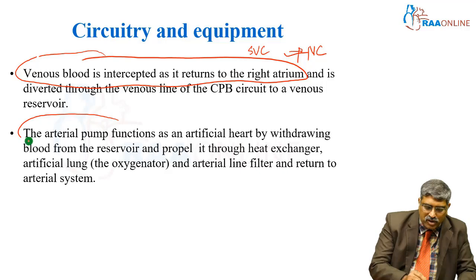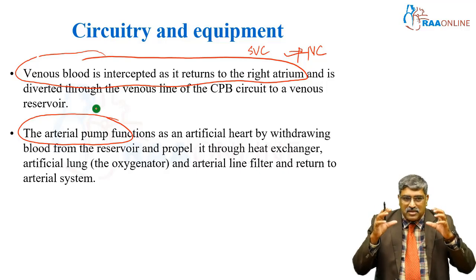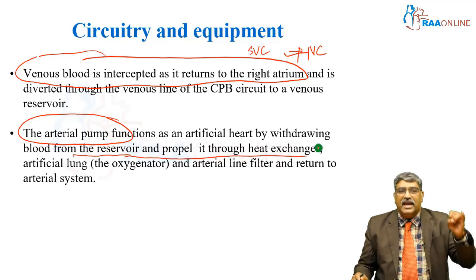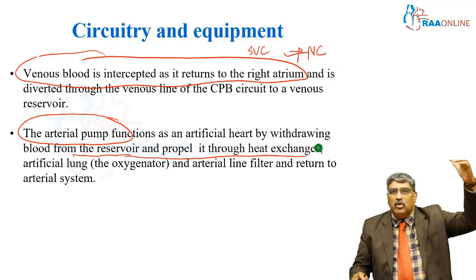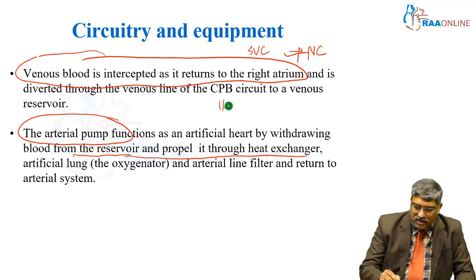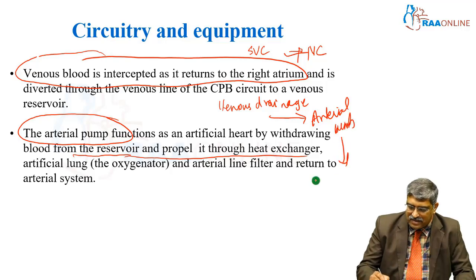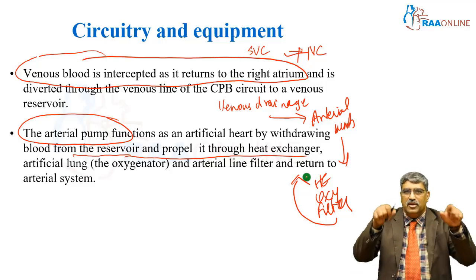From the venous reservoir, the blood goes into the arterial pump, which functions like an artificial heart. The blood received from the reservoir is propelled through the heat exchanger, oxygenator, and an arterial line filter, and then goes back into the circulation. This is the usual circuit.